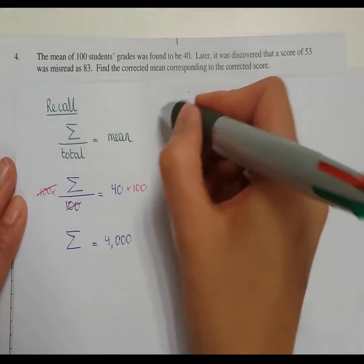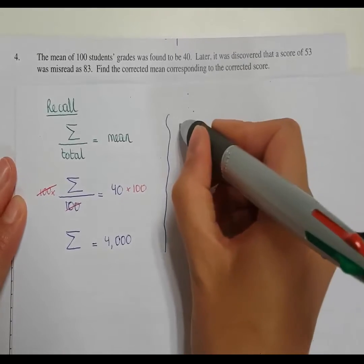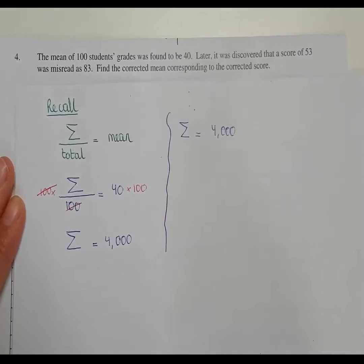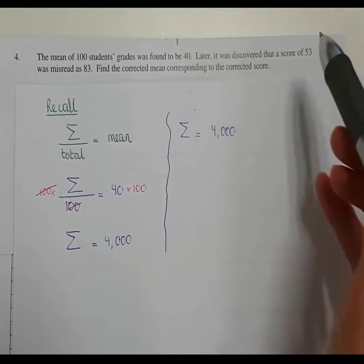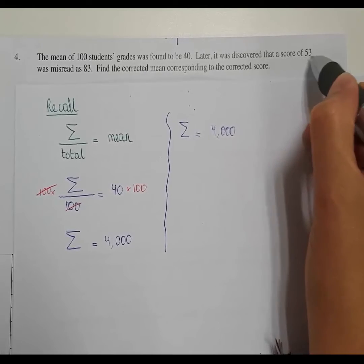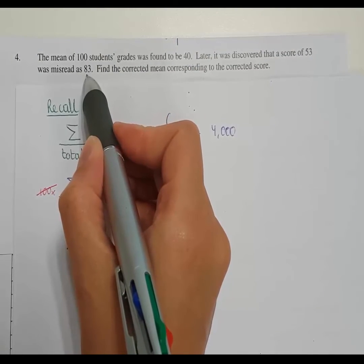Okay, but we made a mistake. Remember we added all the scores together and we got 4,000. However, we made an error. It says here that it was discovered that the score of 53 was misread as 83.